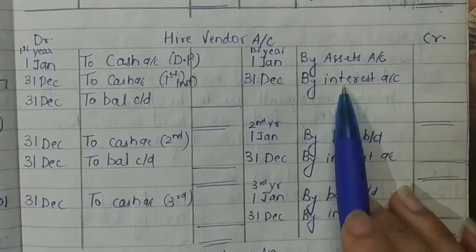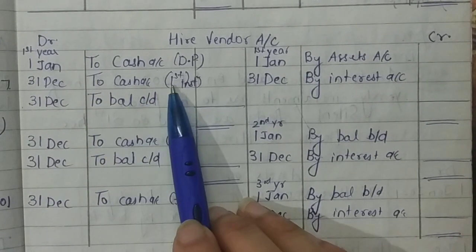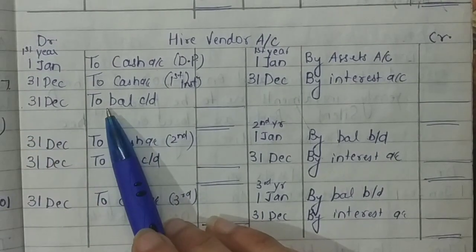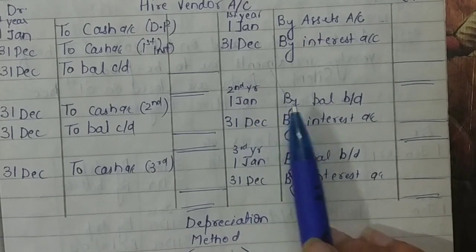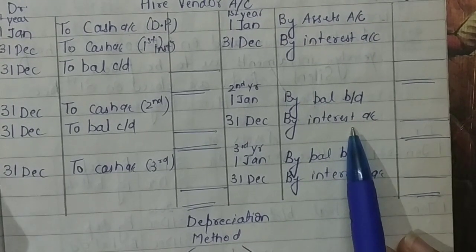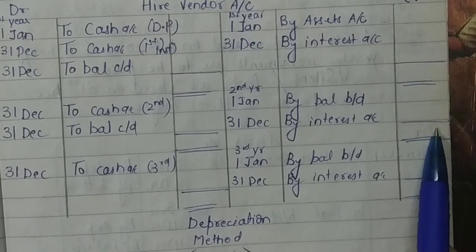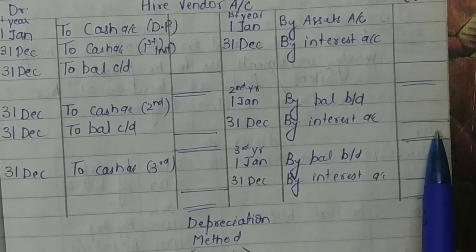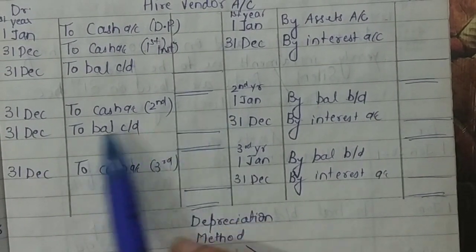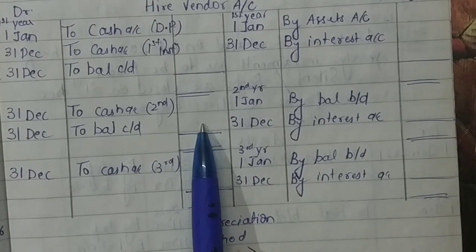Next year, by balance brought down on the first date. Then after another year passes, on the year-end closing date, you again make the interest due — by interest account — the amount taken from the same interest table. At that same moment, you pay the second installment: to cash account. Then you carry down the closing balance for the next year. The following year, on the first date, by balance brought down. Then after a third year, you make interest due a third time and pay the third installment.